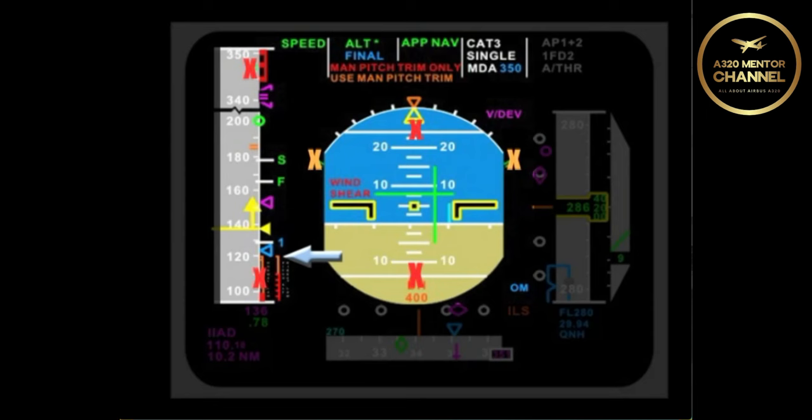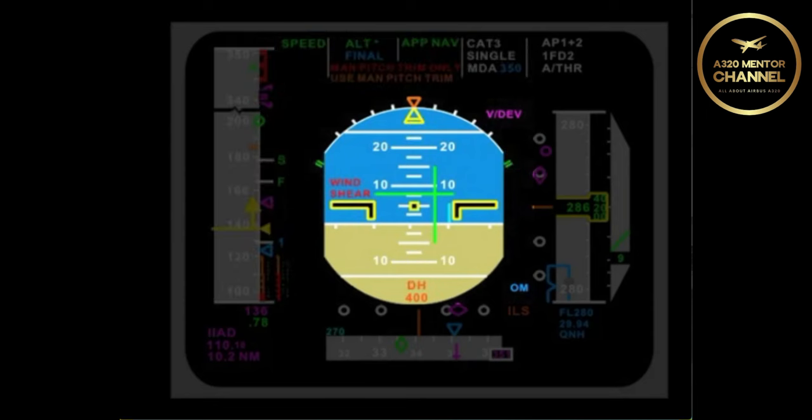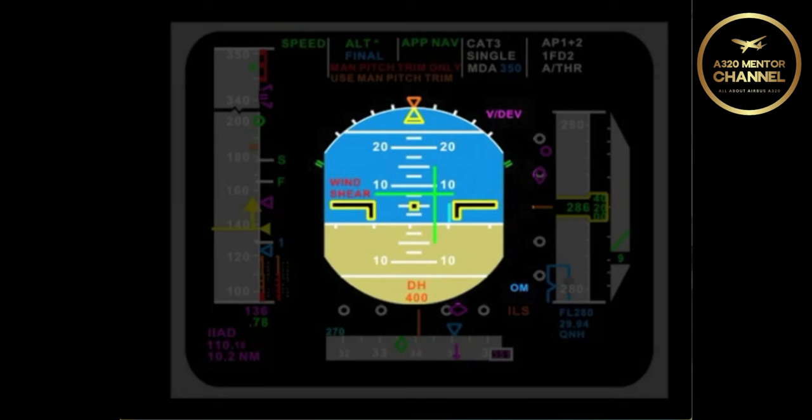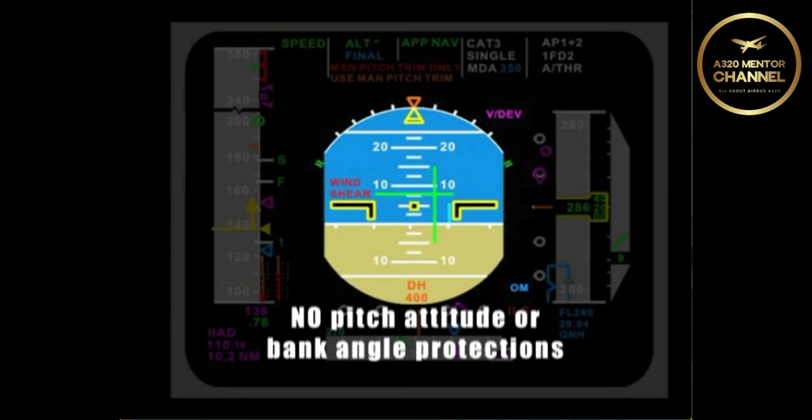What would tell you specifically that you were in alternate law? Well, the ECAM will display the message, alternate law protections lost. Is there any mode that you may not or don't have available in alternate law? You will not have pitch or bank angle protections.